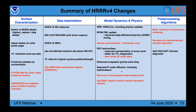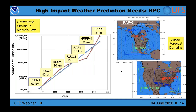HRRR version 4 includes a comprehensive package of data assimilation, land surface changes, model physics, dynamic adjustments, and post-processing changes. It is scheduled for implementation in about a month, with a 30-day stability test underway, targeting an early to mid-July implementation for HRRR version 4.